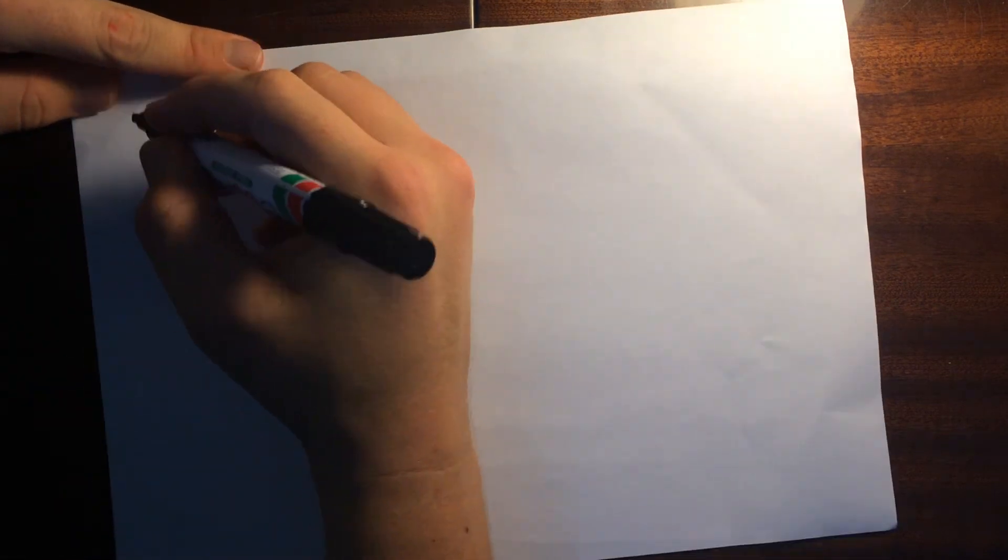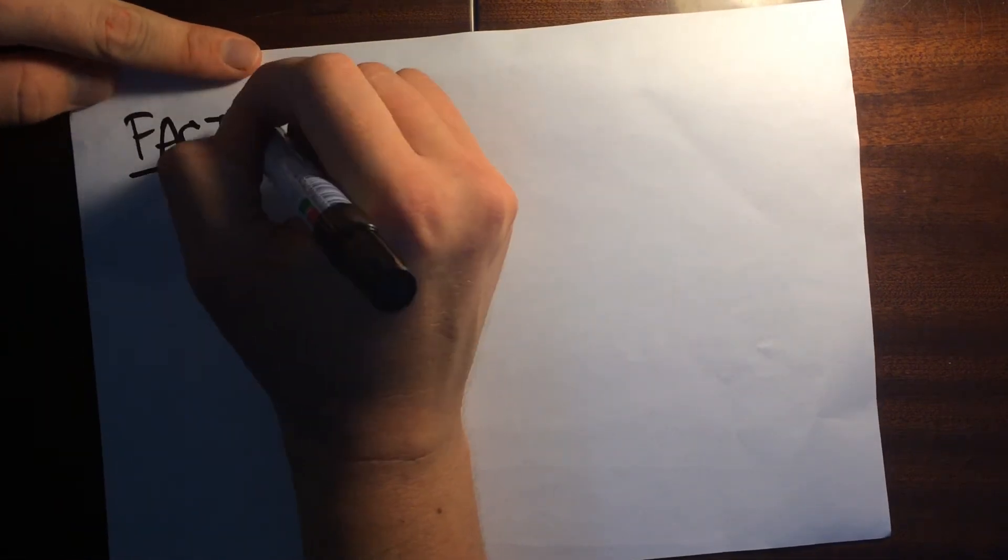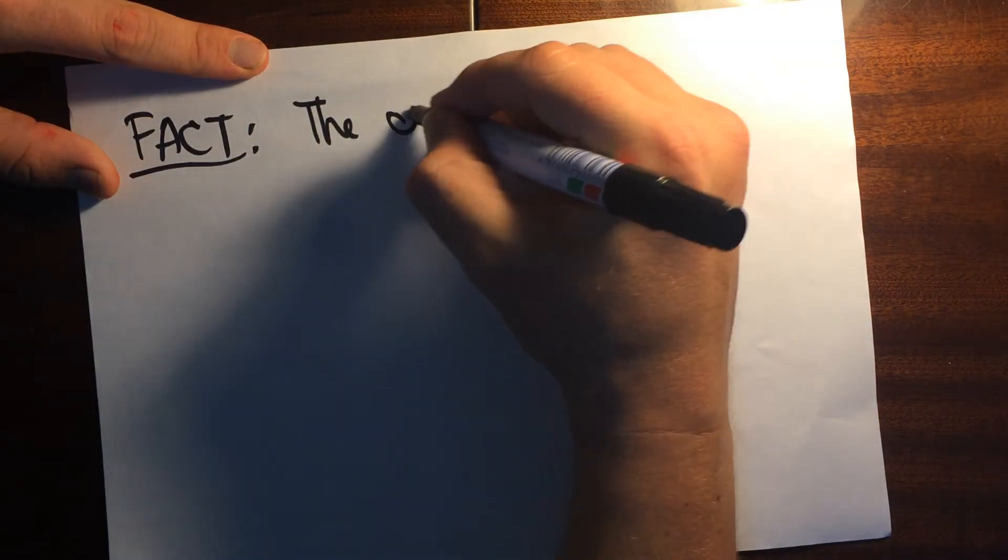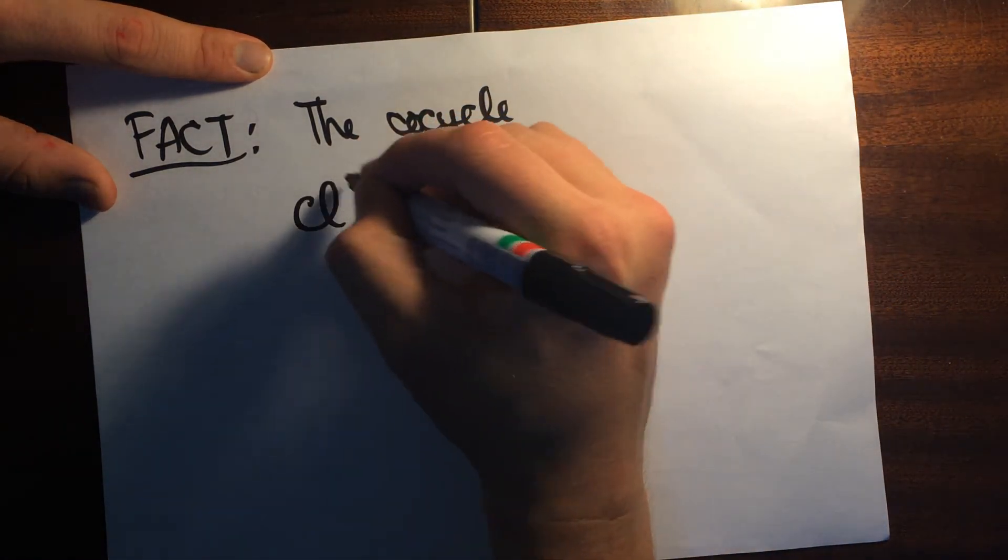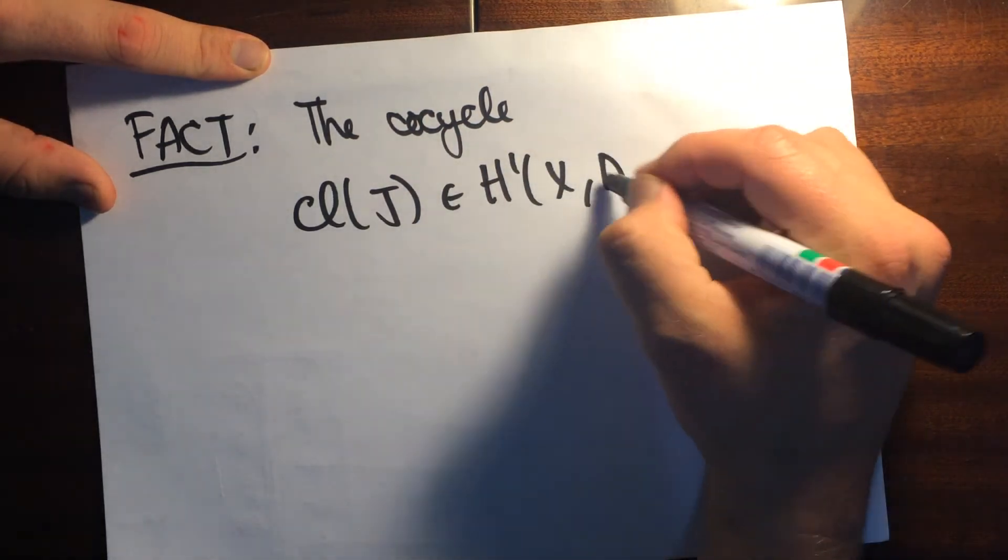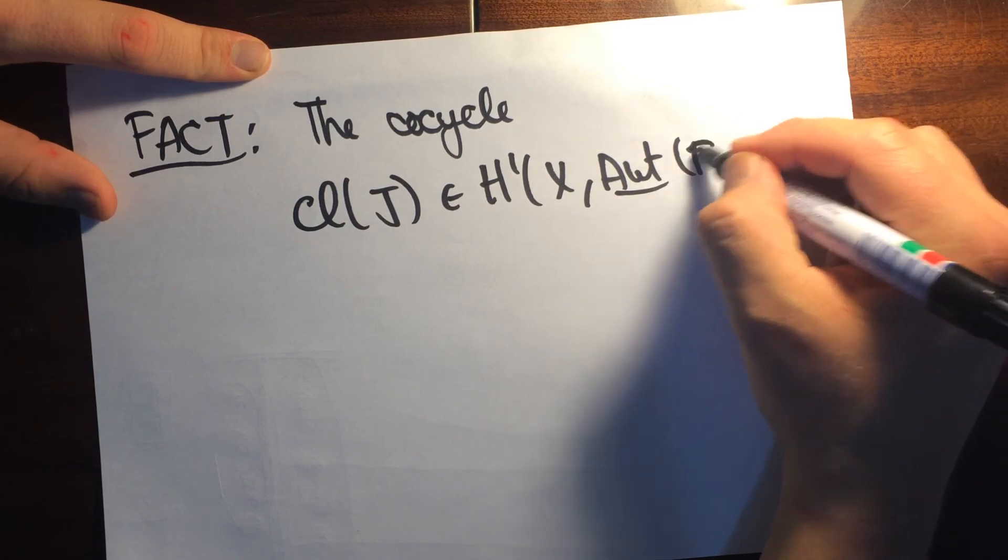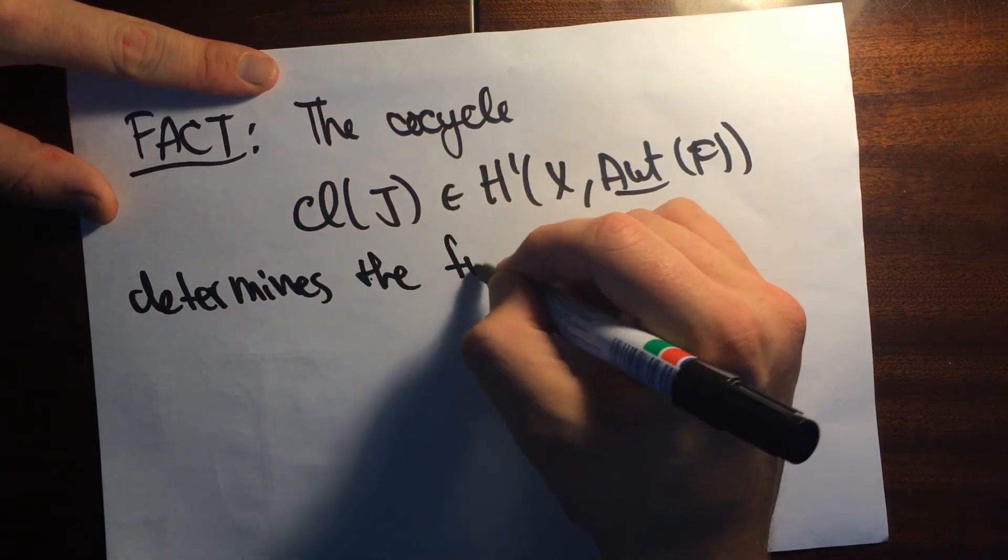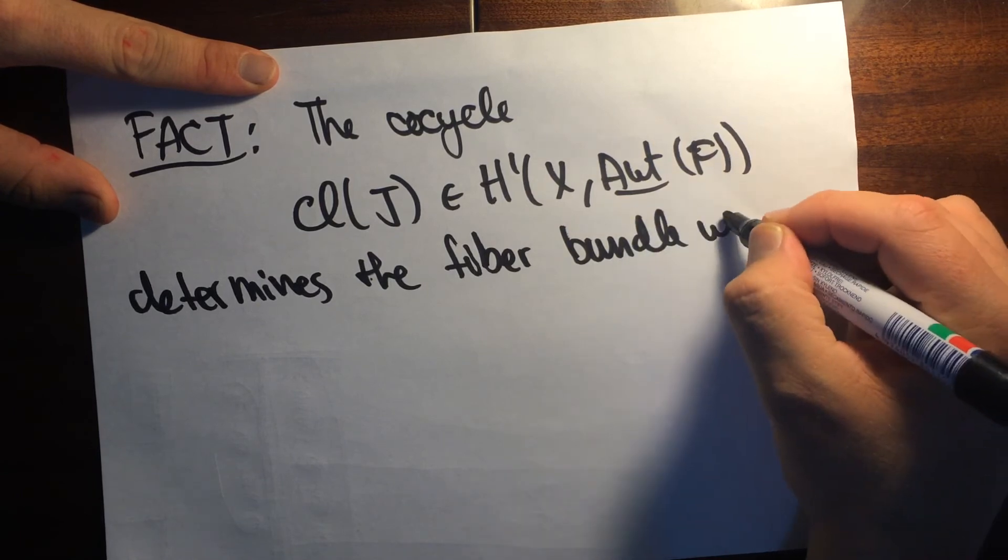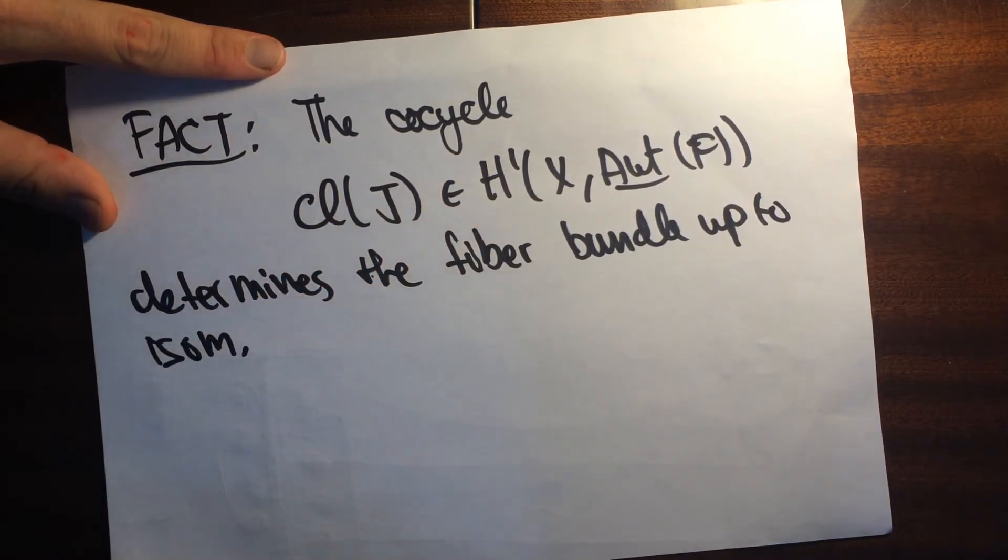And that's that. Let me just tell you a fact, one last fact. So a fact: the cocycle determines the fiber bundle up to isomorphism.